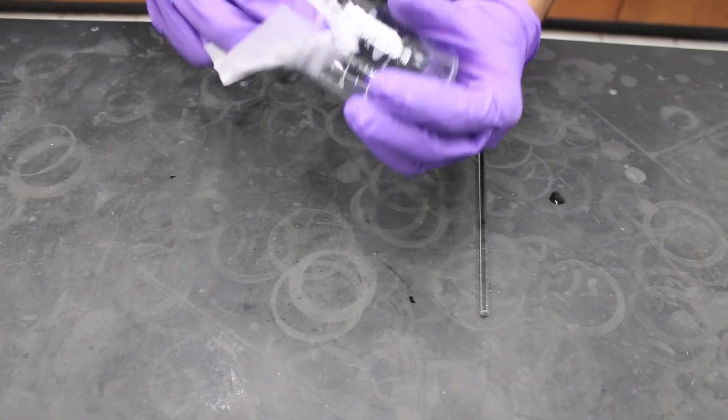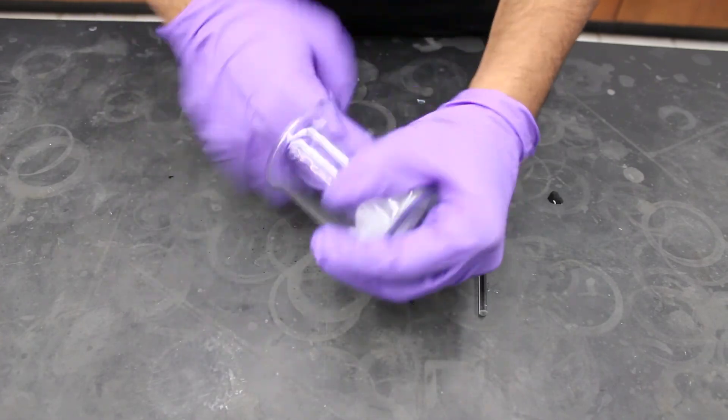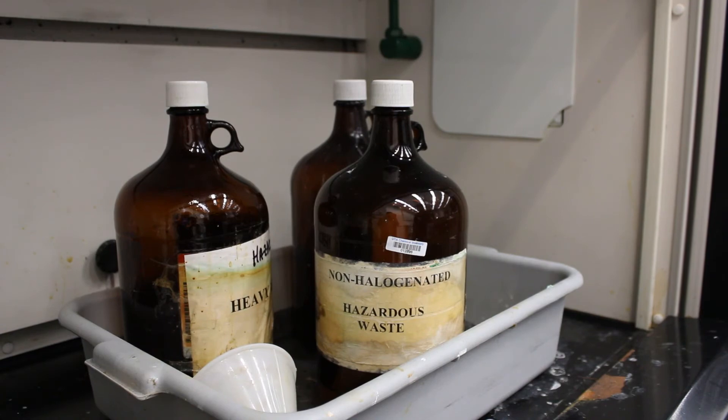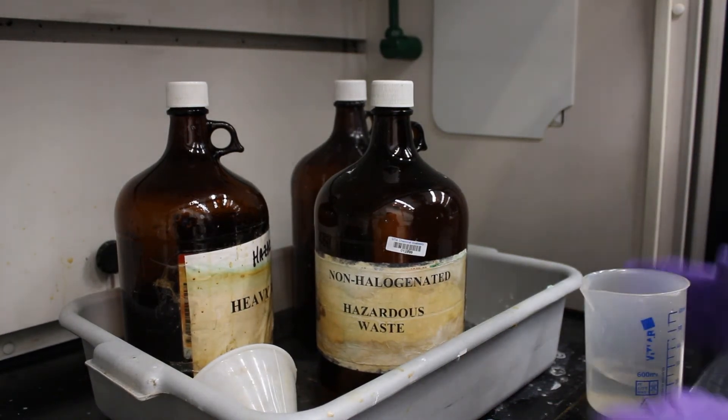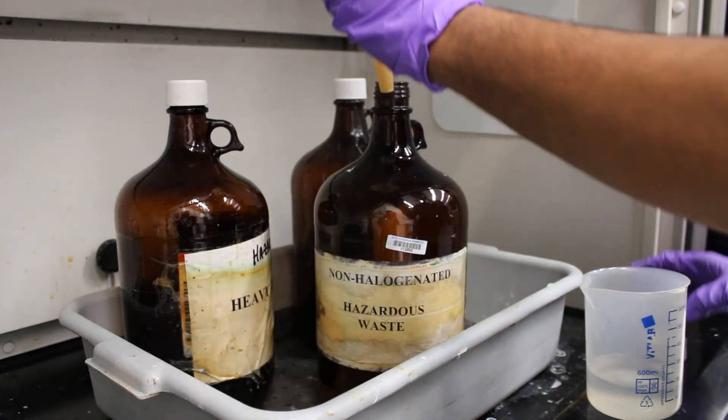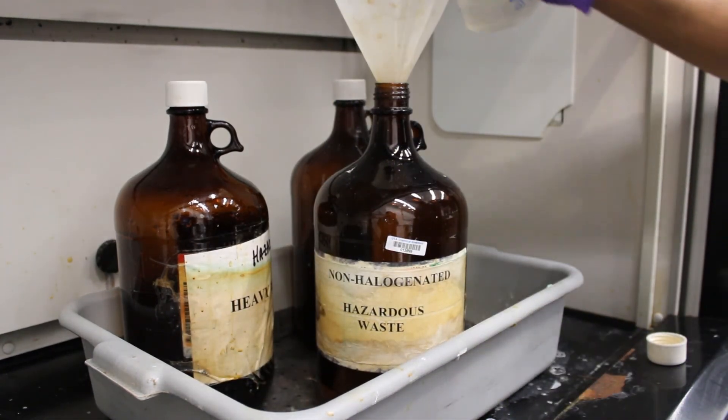Now repeat the previous steps for all additional runs while changing the mass of sodium bicarbonate each time. Once you complete all the runs of the reaction, dispose the contents of the plastic beaker into the non-halogenated waste container.